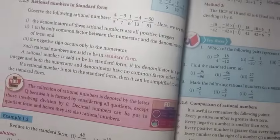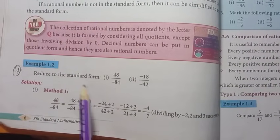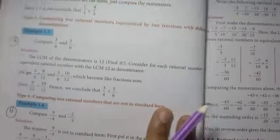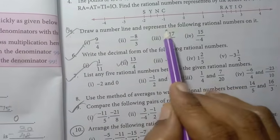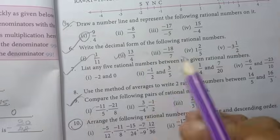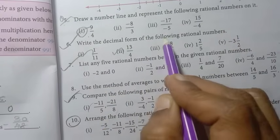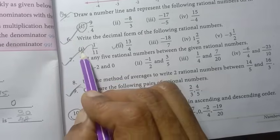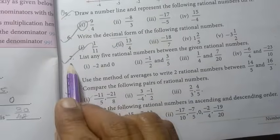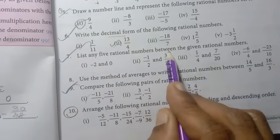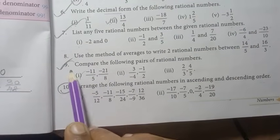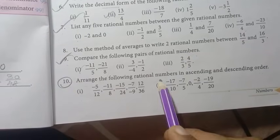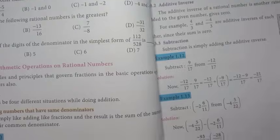In the numbers chapter, look at the example sums. Practice standard form 1.5 and 1.6. On page 13, fifth question: draw a number line, that's the first one. Write the decimal form of the following rational numbers in sixth question, first and second. Then seven: list any five rational numbers between the given rational numbers.